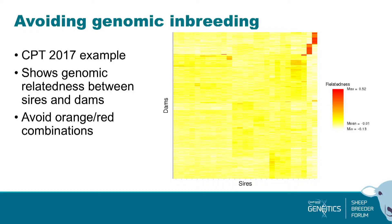Here's an example from the central progeny test flock from last year — the set of dams and sires used. Each little block in this plot is a combination of a dam and a sire. If it's white or light coloured, it has low relatedness; if it's orange or red, it has high relatedness. You can see there are definitely some matings you want to avoid between certain sires and dams.